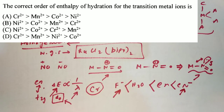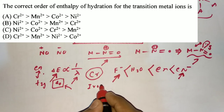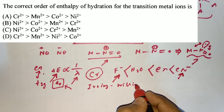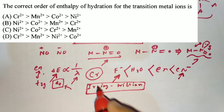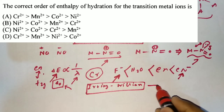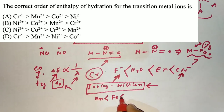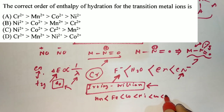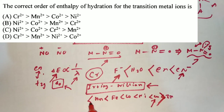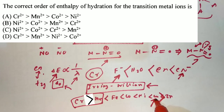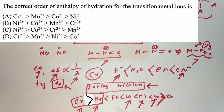The next question is about enthalpy of hydration, for which you need the Irving-Williams series. The Irving-Williams order is: Mn < Fe < Co < Ni < Cu > Zn (Cu has the highest). The final order given in the question gives option C as correct: Ni > Co > Cr > Mn.